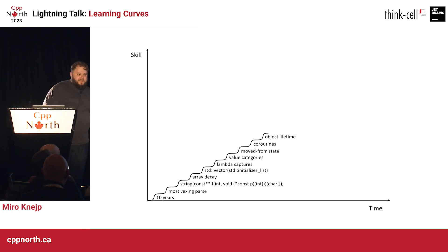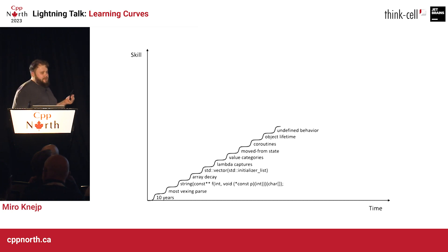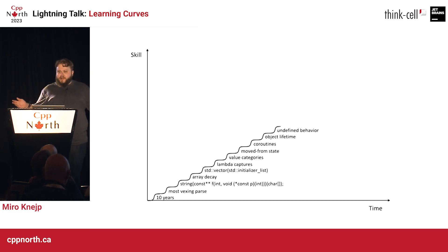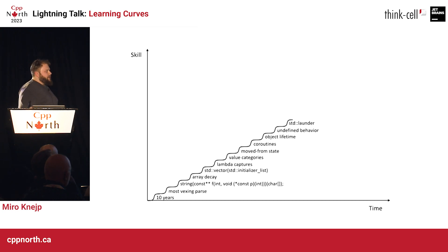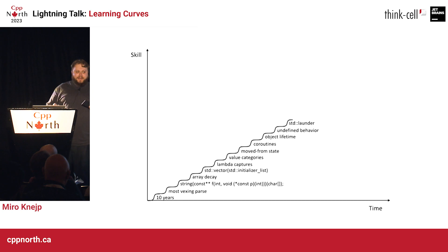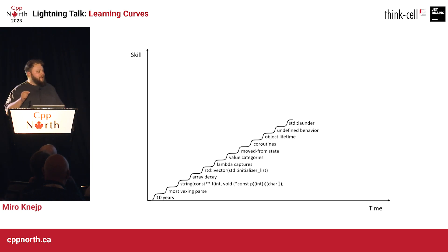Object lifetimes are the biggest source of undefined behavior in the entire language. And of course, as you're trying to find information on this, you eventually find std::launder, and nobody on this planet can explain to you what it does or why you need it. And if you ask the people who put it in the standard, they tell you not to use it.